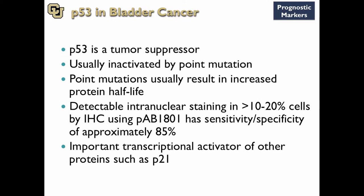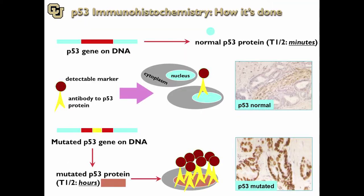P53 is a tumor suppressor — one of the very important and most highly mutated genes in cancer overall, not just bladder. It's detected commonly by sequencing or immunohistochemistry. Immunohistochemistry is based on the Western idea and is a derivative of the ELISA. You have cells that express P53, and because the mutated P53 is more stable, there is more accumulation of the antibody with the marker, so the nuclei appear darker.